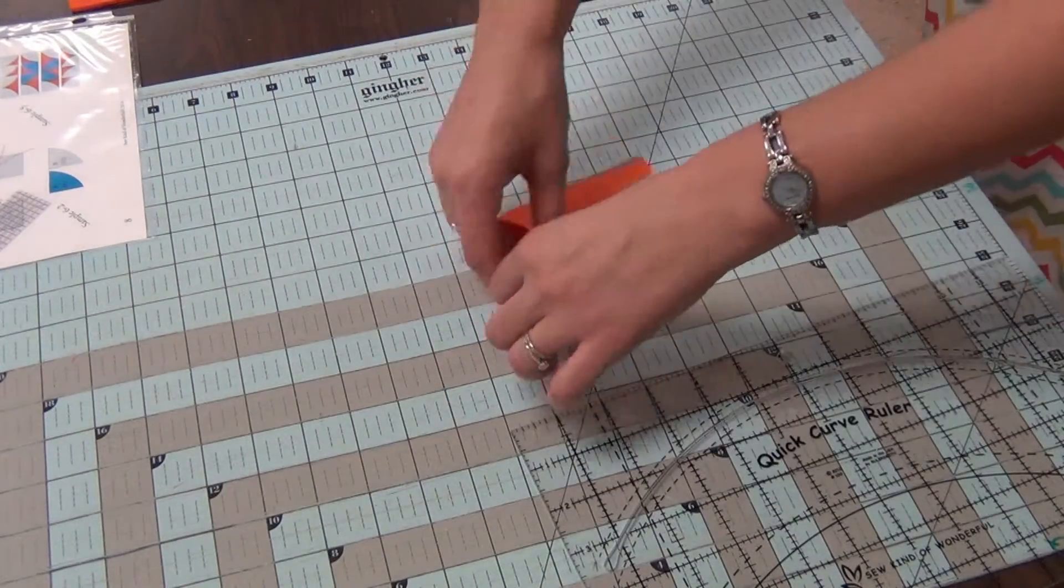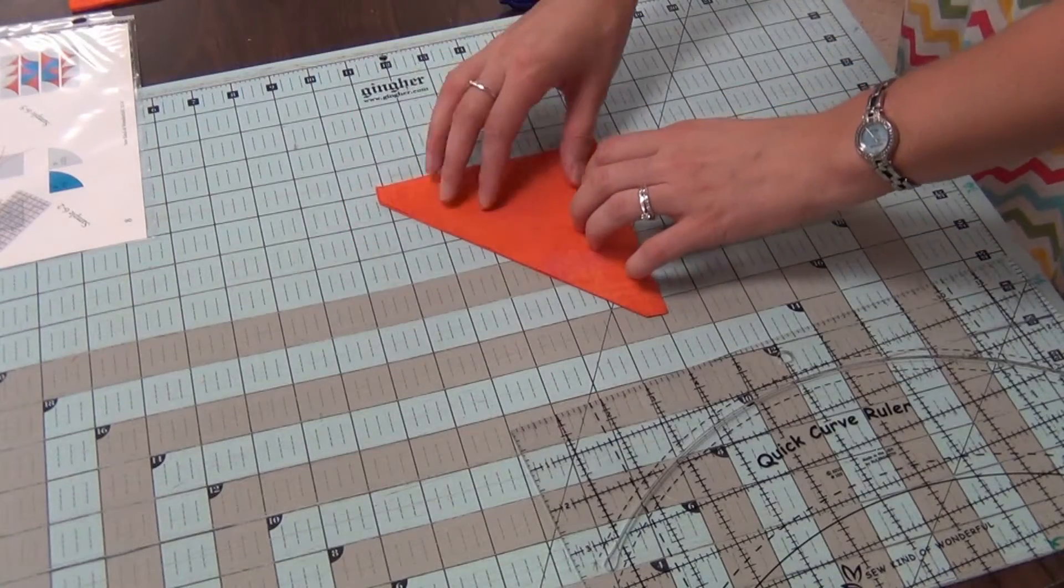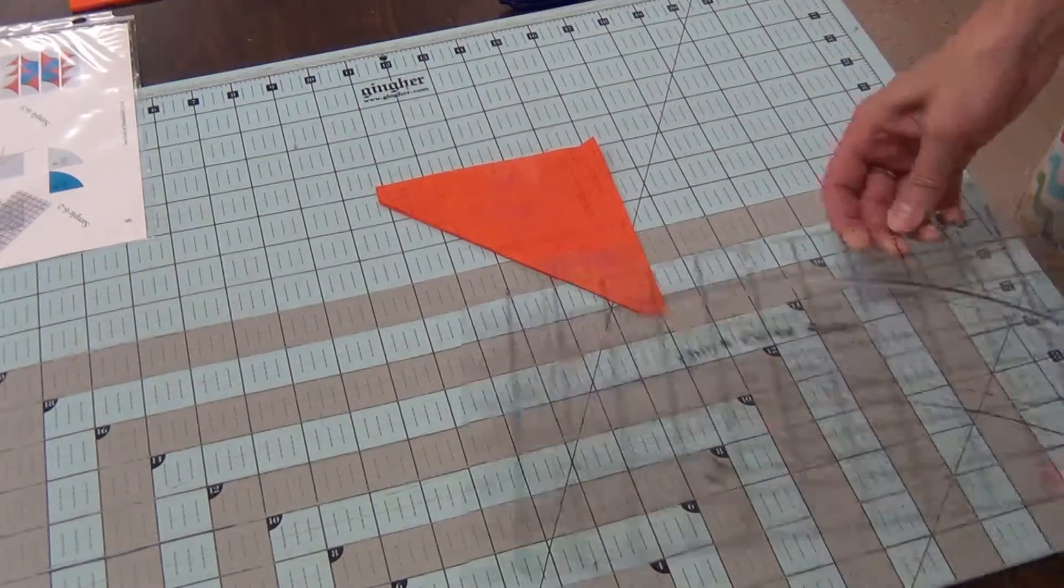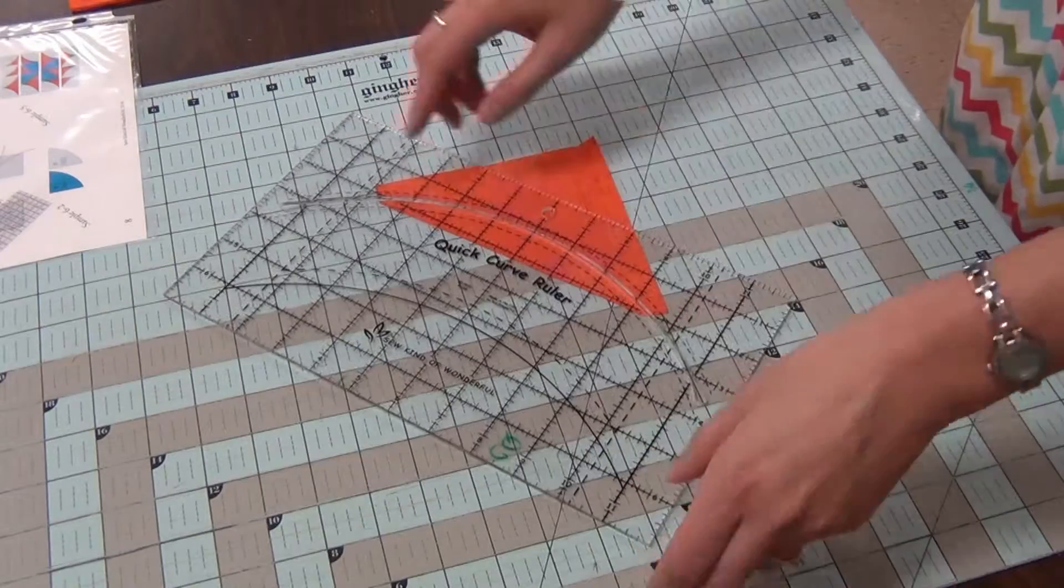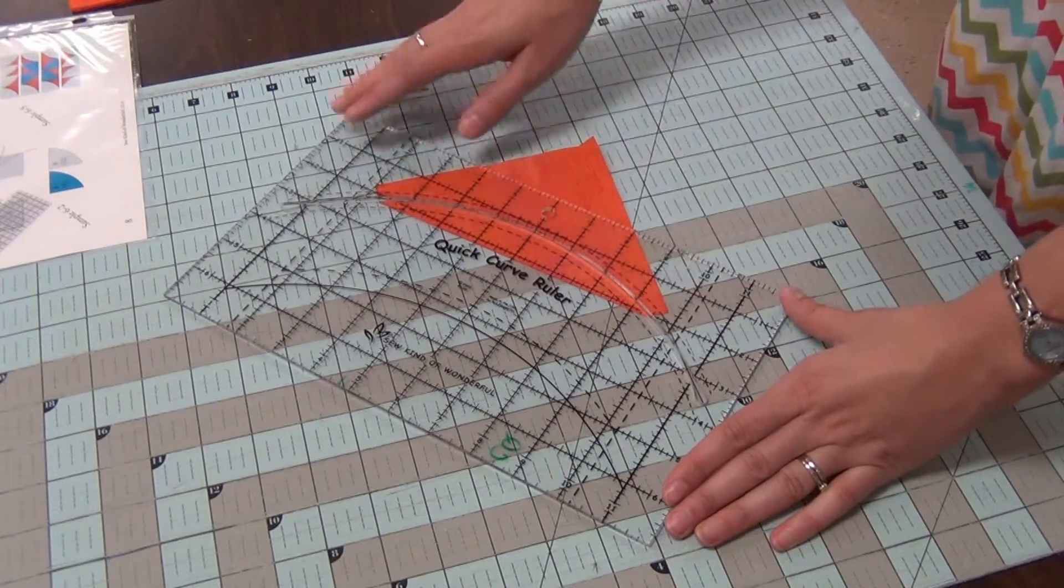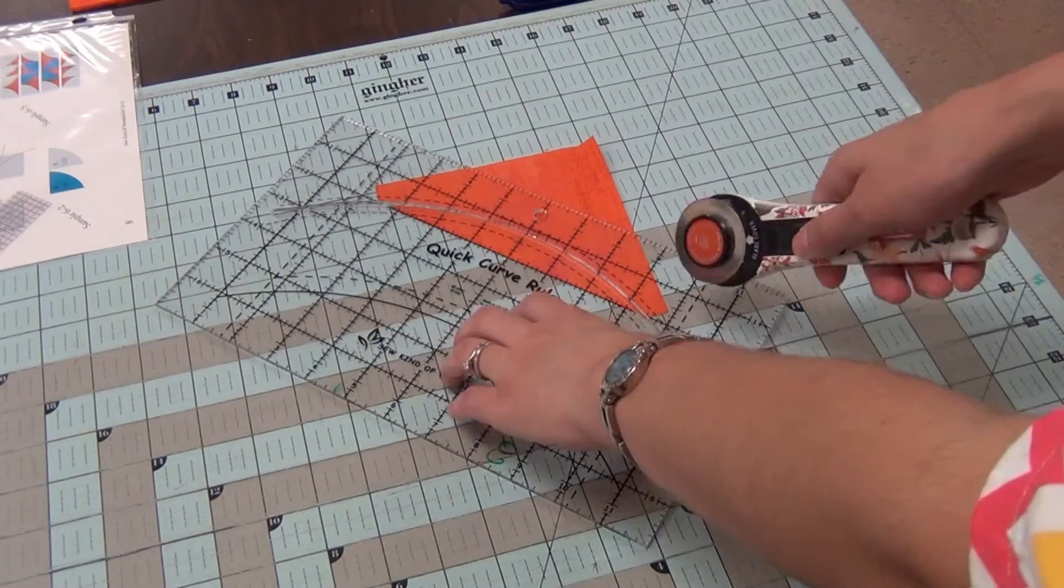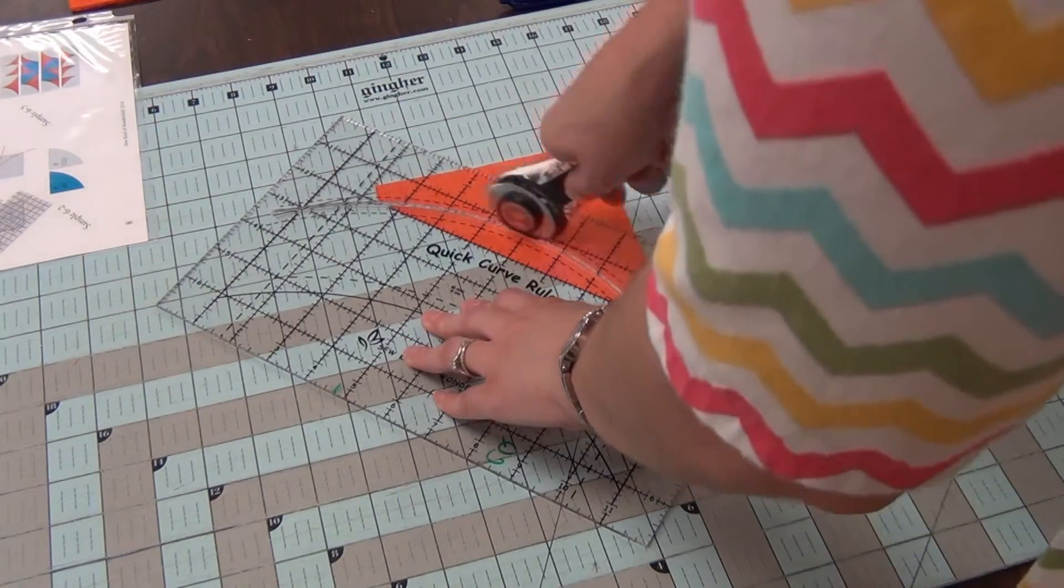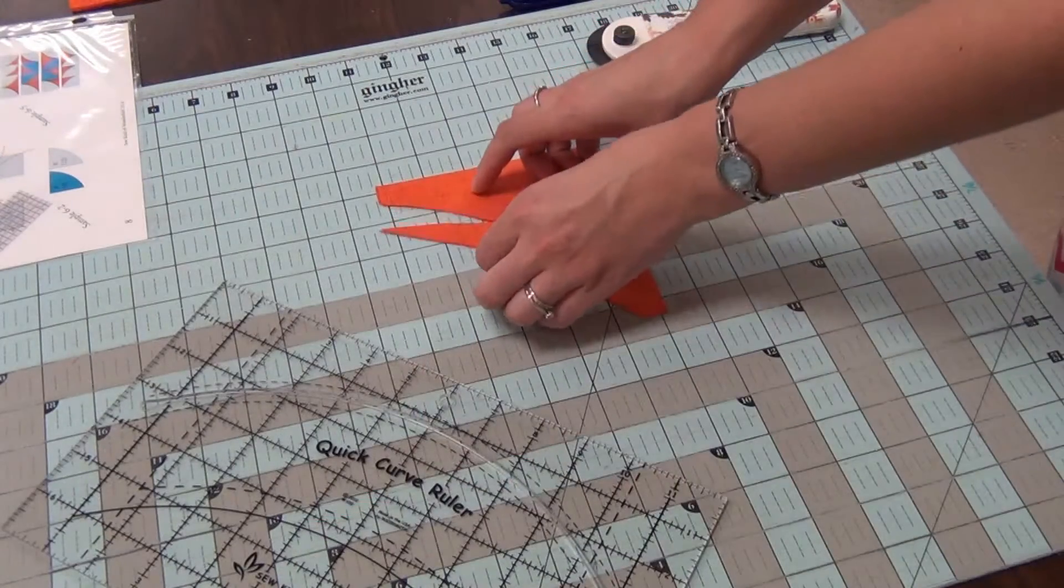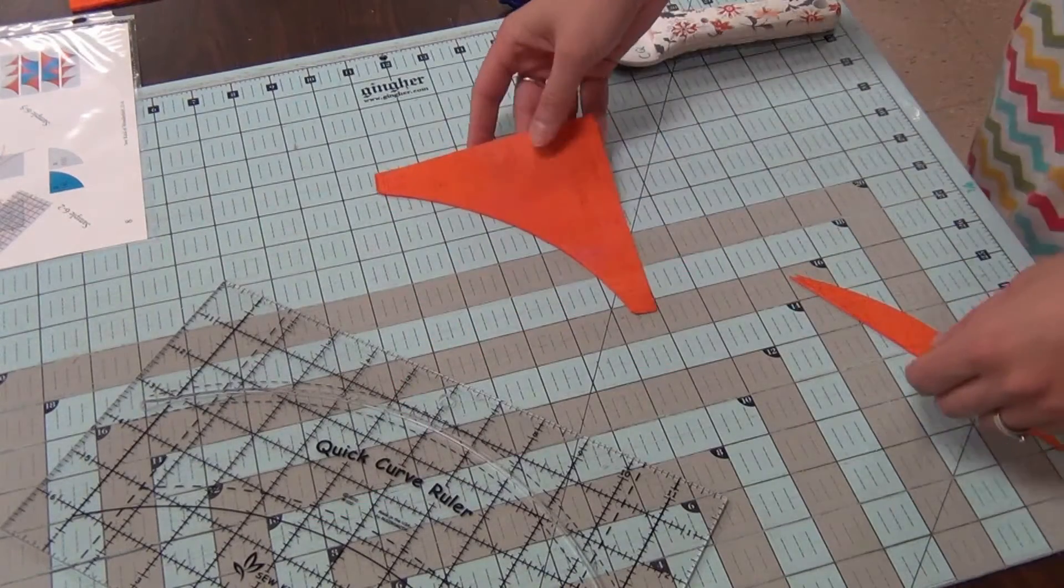Now we need to cut the curve on this ruler. So we're going to be using the curve of our ruler to cut this curve out to create curved half square triangle pieces. I'm going to go ahead and make that cut. So that's my piece A.